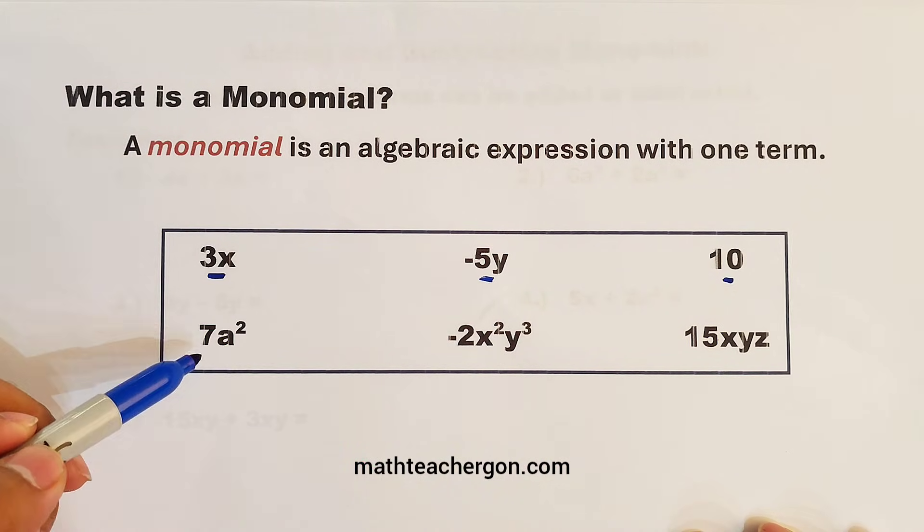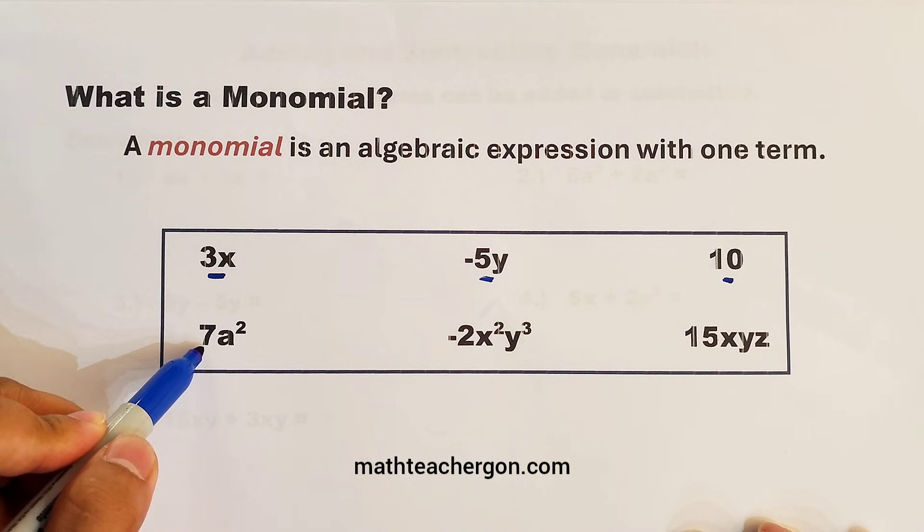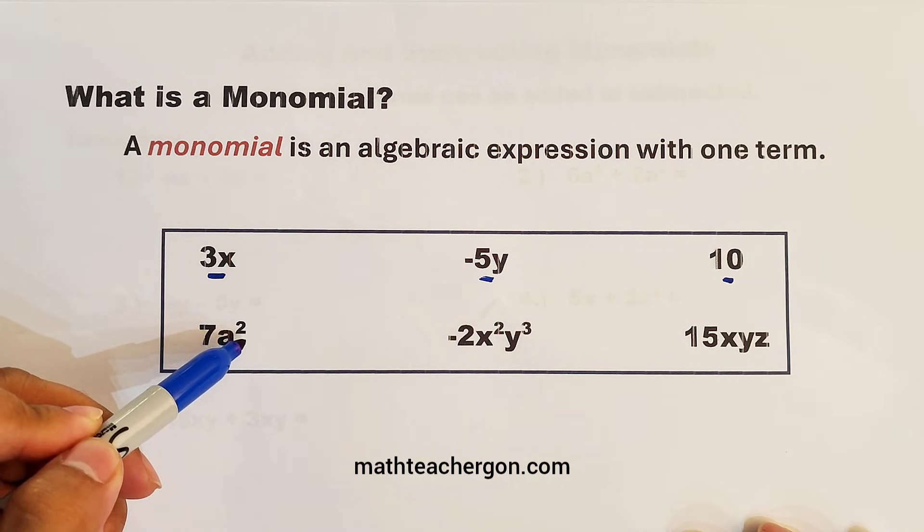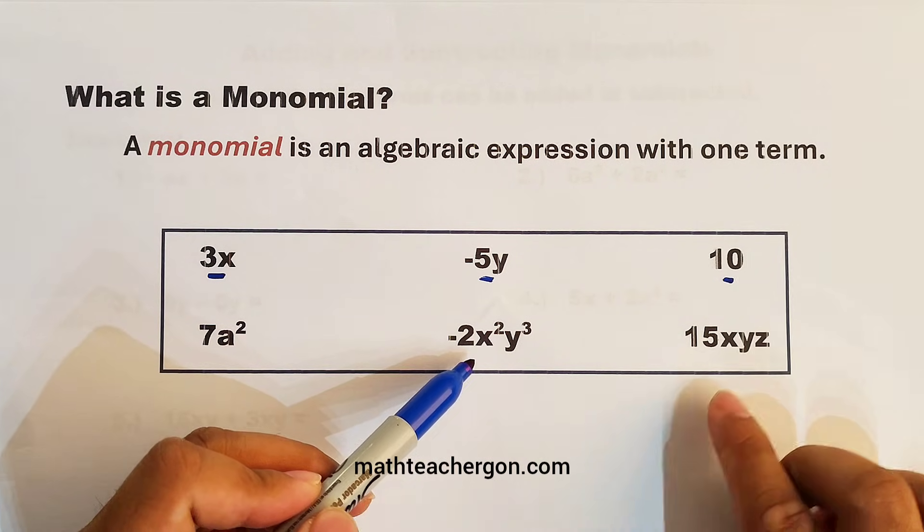Next, we have 7a squared, which is a composition of a coefficient, numerical coefficient, variable, and exponent. Same with this one and with this one.